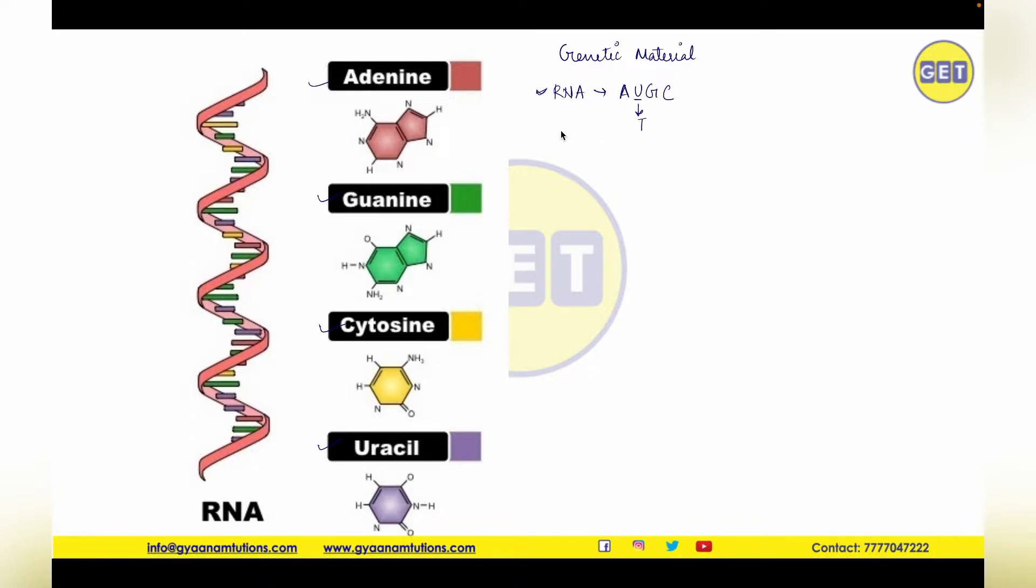Now, there are some different types of RNA, among which we are going to discuss mRNA, which is messenger RNA, and tRNA, which is transfer RNA. Now, these two types are very important for codons and anticodons.